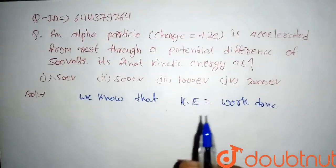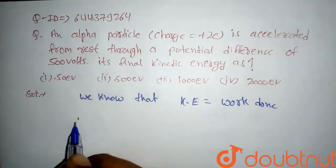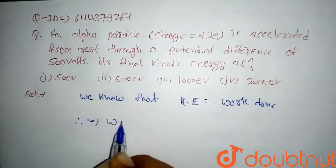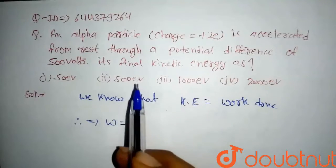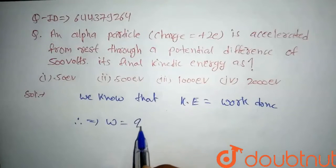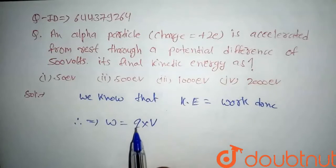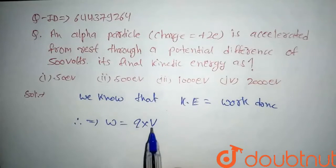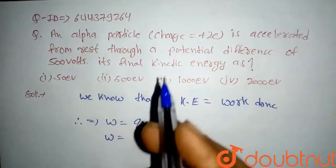We know that the work done W is given by, when any particle is accelerated in any potential difference, W = Q × V, where Q is charge and V is voltage. So here our work done will be, the charge is 2e and our voltage is 500 volts.